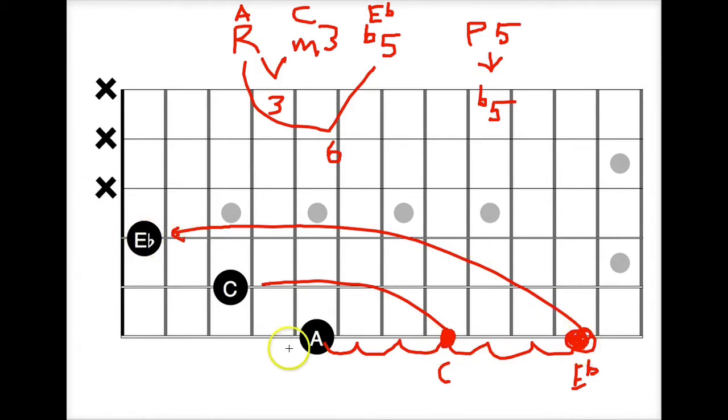This note the same as this one. And then, by the way, this is your open A right there. So that is your A diminished chord, A, C, E flat.